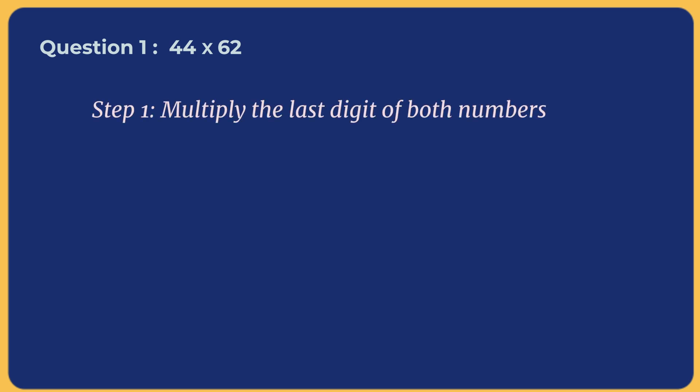The first step is to multiply the last digit of both the numbers, here being 4 and 2. When they are multiplied, we get the product as 8.